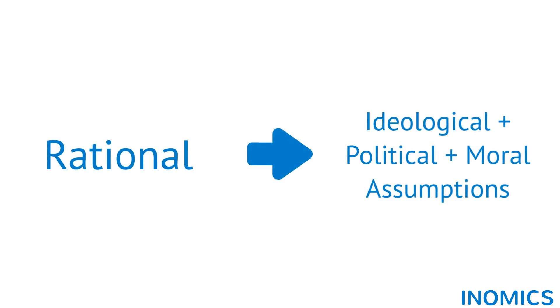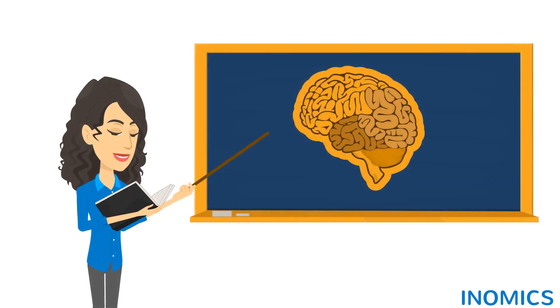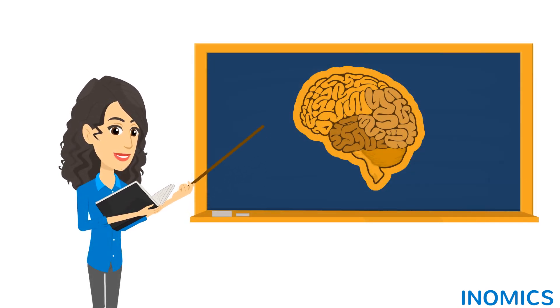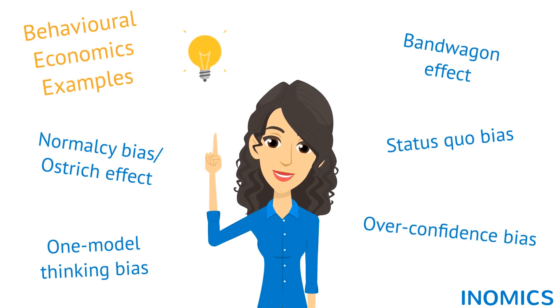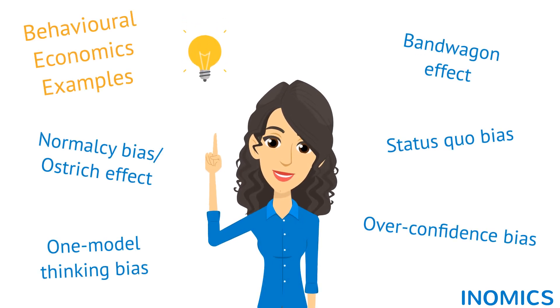This word — rational — does a lot of heavy lifting for all manner of ideological, political, and moral assumptions. Behavioural economics, therefore, uses aspects of psychology to better understand how and why people actually make the economic decisions they do, not just assume they act narrowly out of individual self-interest and maximisation.